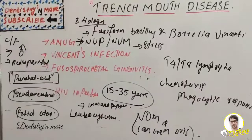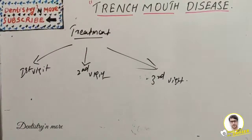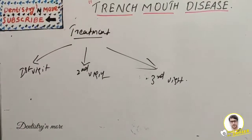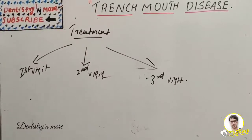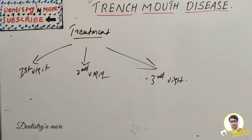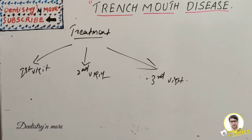Treatment of trench mouth disease involves several basic objectives: alleviation of acute inflammation by reducing the microbial load, removal of all necrotic tissue, alleviation of generalized problems such as fever and malaise, and correction of systemic conditions which contribute to the initiation or progression of gingival change.